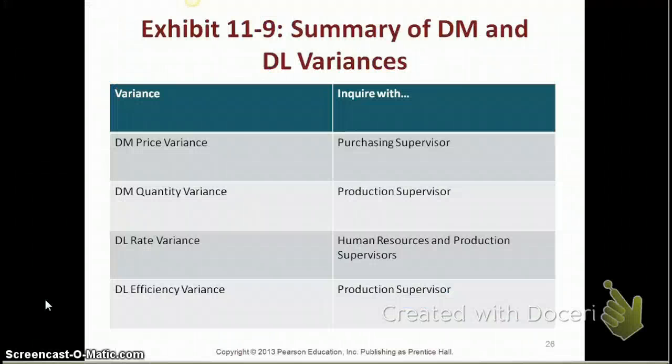For direct material and direct labor variances, you need to know how to calculate the price and quantity variances, the rate and efficiency variances, and also who is responsible for each variance. The direct material price variance is the result of purchasing direct materials at a higher or lower price than anticipated — the purchasing supervisor is responsible. The direct material quantity variance relates to usage of direct materials, so the production supervisor would be responsible.